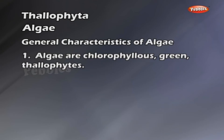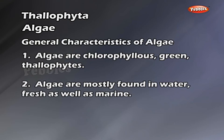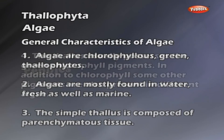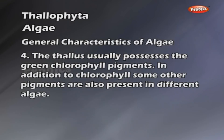Algae are chlorophyllous, green thallophytes. Algae are mostly found in water, fresh as well as marine water. The simple thallus is composed of parenchymatous tissue. The thallus usually possesses the green chlorophyll pigments.